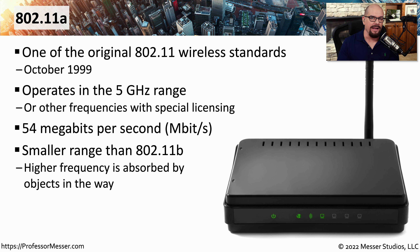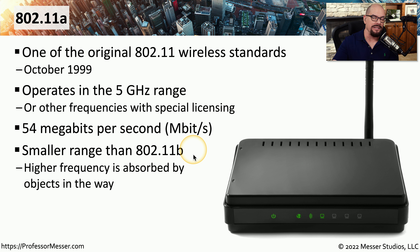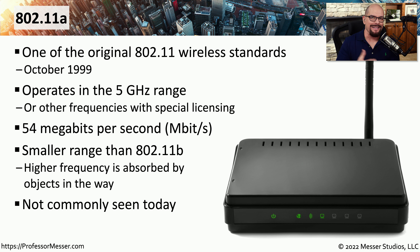Because 802.11a operates at 5 gigahertz frequencies, it doesn't tend to have the same range as lower frequencies such as the 2.4 gigahertz range used by 802.11b. With these higher frequencies, the objects around us tend to absorb the signals, whereas with 802.11b they tend to bounce off of those devices, giving a little more distance from a 2.4 gigahertz-based network. These days it's not common to see 802.11a in use, and very often it will have already been upgraded to a newer standard.